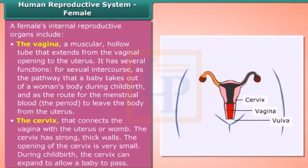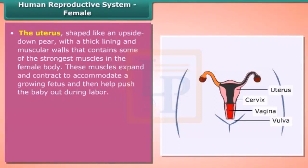The cervix connects the vagina with the uterus or womb. The cervix has strong, thick walls, and its opening is very small, but during childbirth it can expand to allow a baby to pass through. The uterus is shaped like an upside-down pear with a thick lining and muscular walls. Its muscles expand and contract to accommodate a growing fetus and then help push the baby out during labor.